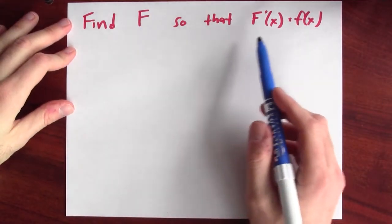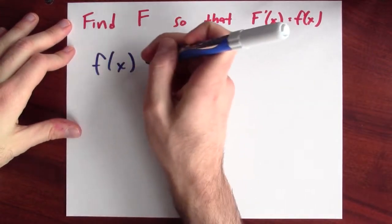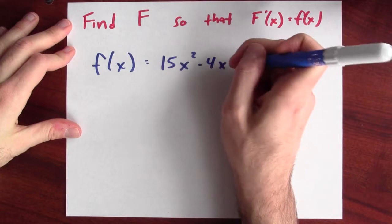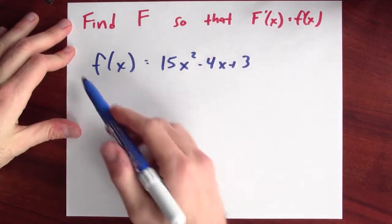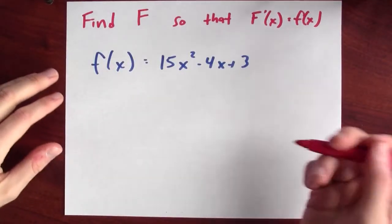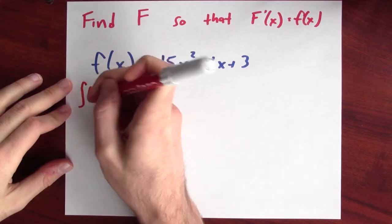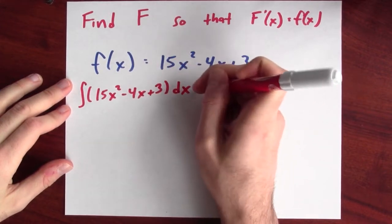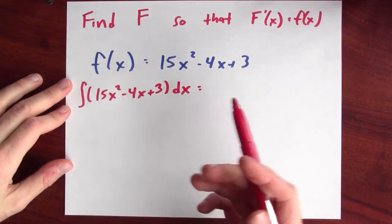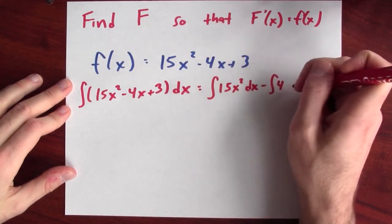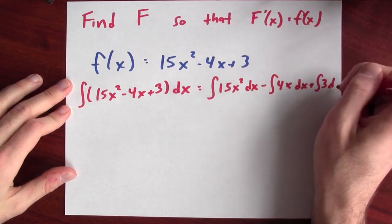What if I wanted to anti-differentiate a polynomial? For example, let's find a function big F so that the derivative of big F is little f, where little f is the polynomial 15x squared minus 4x plus 3. The anti-derivative of a sum and a difference is the sum and difference of the anti-derivatives. So I can write this as the anti-derivative of 15x squared dx, minus the anti-derivative of 4x dx, plus the anti-derivative of 3 dx.